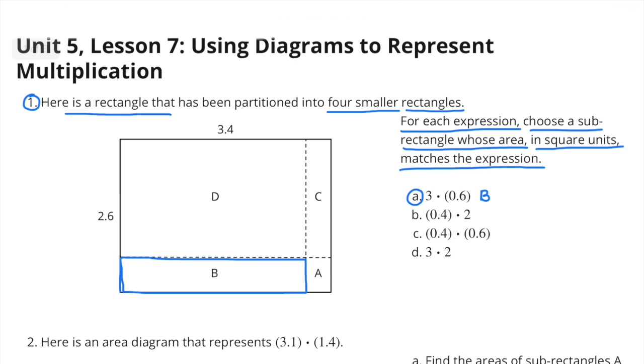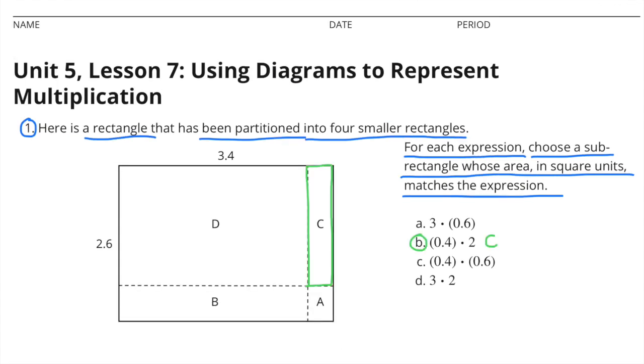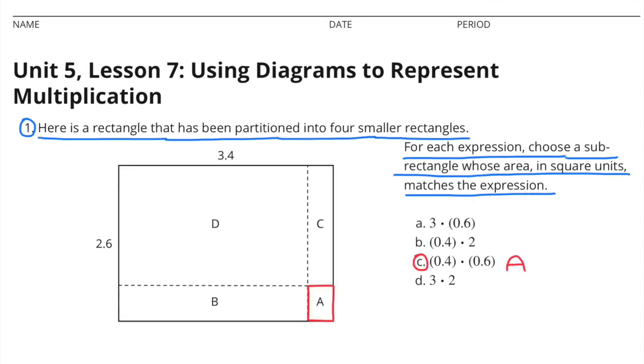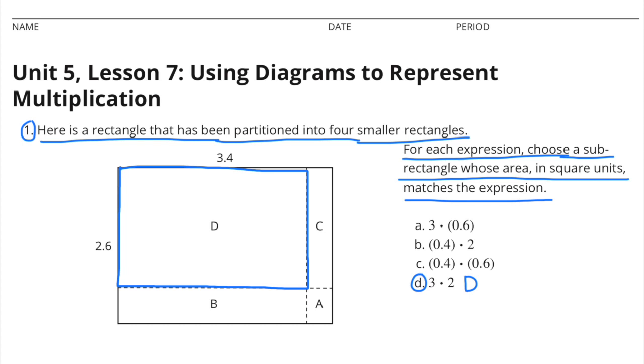A. 3 × 6 tenths matches sub-rectangle B. B. 4 tenths × 2 matches sub-rectangle C. C. 4 tenths × 6 tenths matches sub-rectangle A. D. 3 × 2 matches sub-rectangle D.